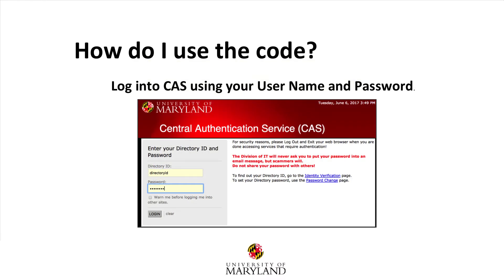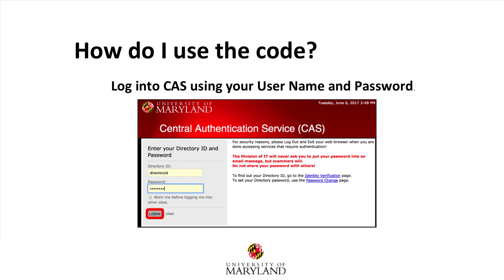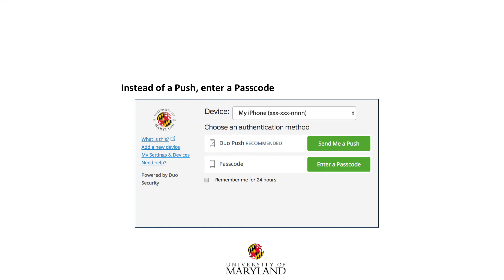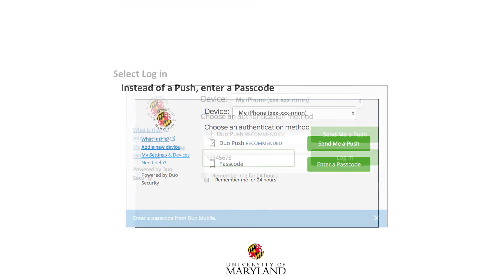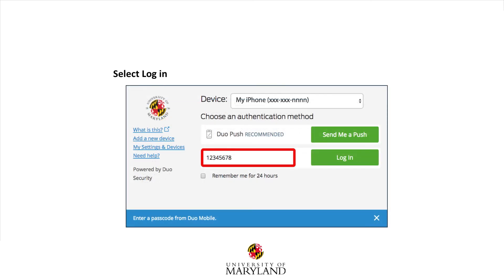To use one of the codes you have generated, log in to CAS using your username and password, then select Login. When this screen appears, instead of sending a push, select Enter a Passcode. Enter one of the generated passcodes, then select Login.